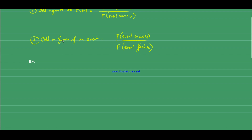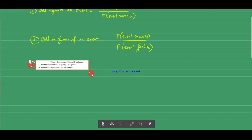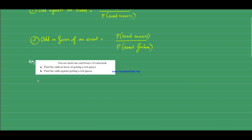As long as you understand the concept of probability, odds is very easy. Example one: you are dealing one card from a 52-card deck and we want to find the odds in favor of getting a red queen. The probability of success — getting a red queen — is 4 over 52, since there are four queens.